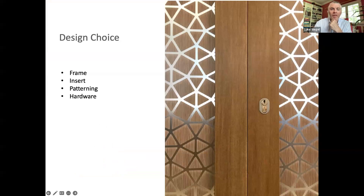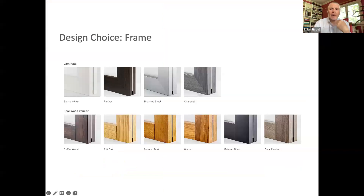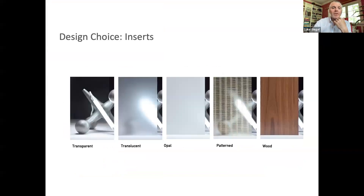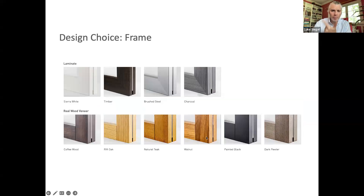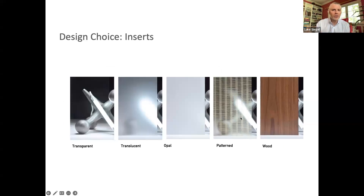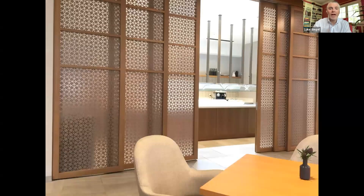Now let's look at material choices — frames, insert patterning, and hardware. The pricing examples I've been giving assumed laminate frames — HPL, low-pressure laminate, or vinyl laminate — and simple glazing like transparent, translucent, or opal. If you want real wood veneer, stain match, or paint match, expect that to add 20 to 40% to the system cost. Glazing is a wild card — you can spend 100 to 200% more with options like eco-resin encapsulated veneer, botanicals inside polycarbonate, or decorative laminated glass. A $10,000 bypassing wall can easily become a $20,000–$25,000 wall just by specifying a gorgeous glazing option.